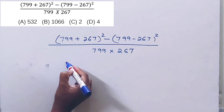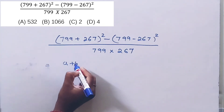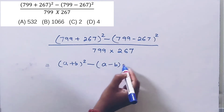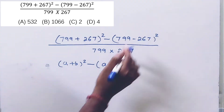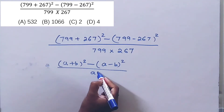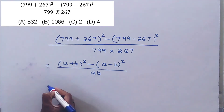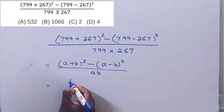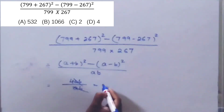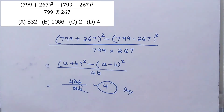We use the formula: a plus b, whole square minus a minus b, whole square, divided by ab. Since a plus b whole square minus a minus b whole square equals 4ab, dividing by ab gives 4. So the answer is 4. Thank you.